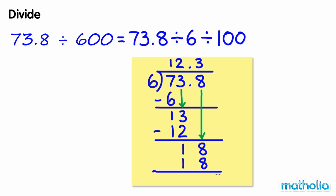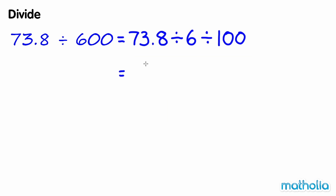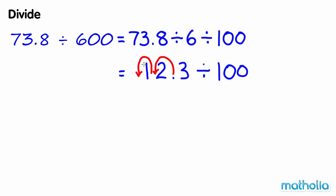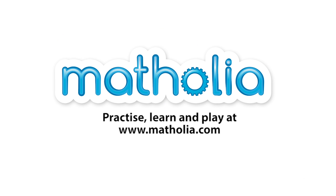73.8 divide 6 equals 12.3. Divide this by 100 by shifting the decimal point 2 places to the left. So 73.8 divide 600 equals 0.123.